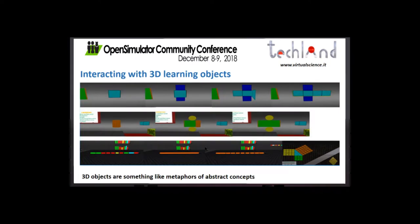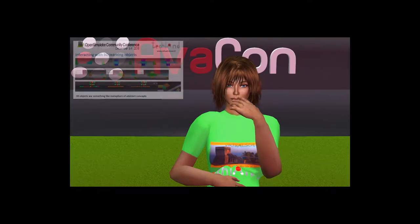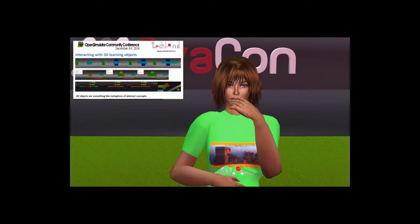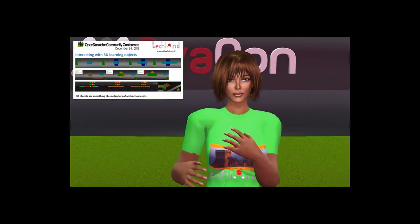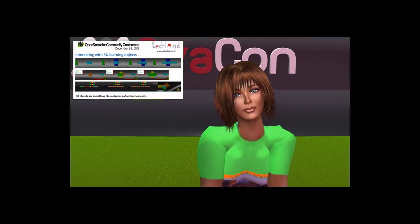Techland was initially developed as a giant 3D book where scripted learning objects act as paragraphs, displaying mathematical and scientific properties and giving information. Learning objects are placed along structured learning pathways in thematic areas. During daily activity, Techland is shown by an interactive whiteboard and the teacher's avatar acts as a kind of assistant. When clicked, objects change their appearance and position, animating themselves and giving information.